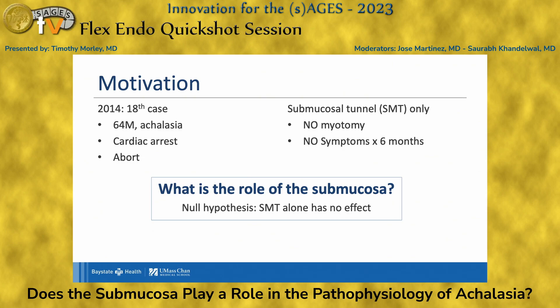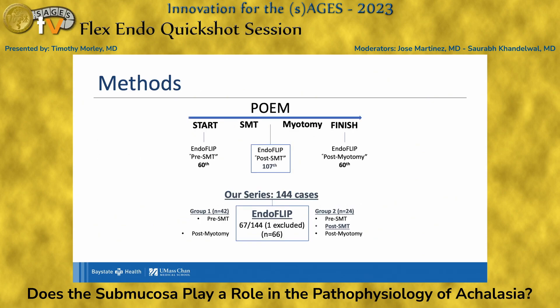This asked the question: what is the role of the submucosa? We hypothesized that the submucosal tunnel actually played a role in the therapeutic benefit of POEM and that we could capture this with endo flip. This is our POEM and endo flip paradigm — starting with the 60th case, we started collecting diameter and distensibility index both preoperatively and postoperatively.